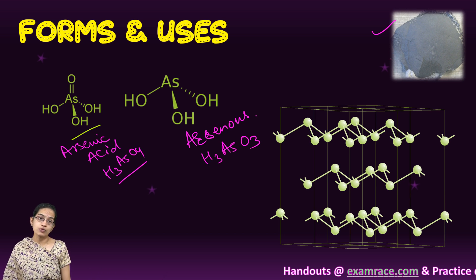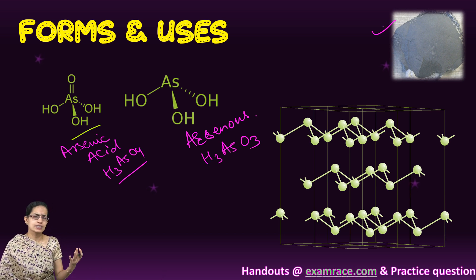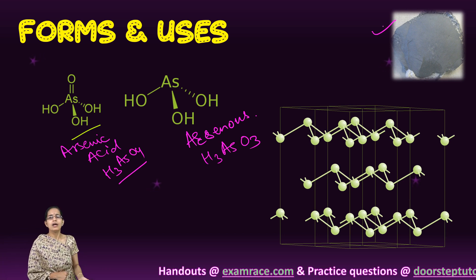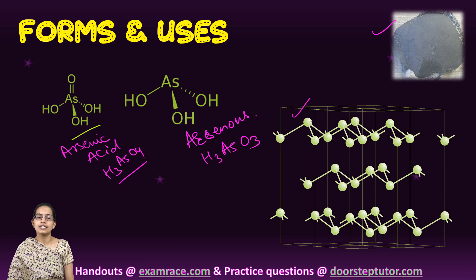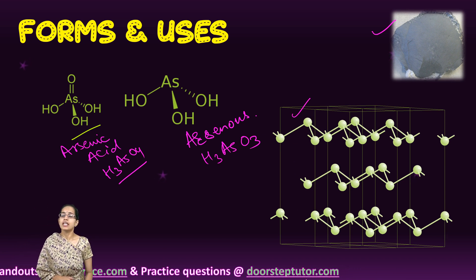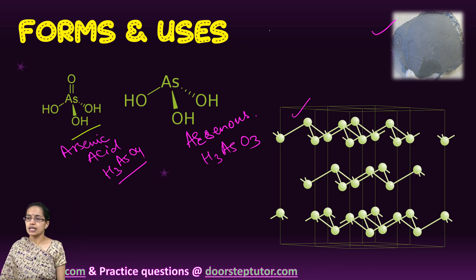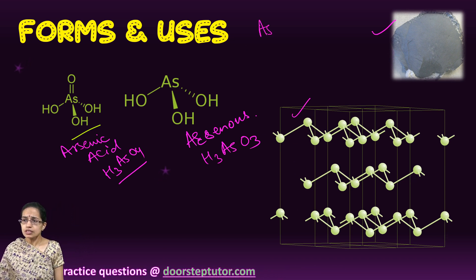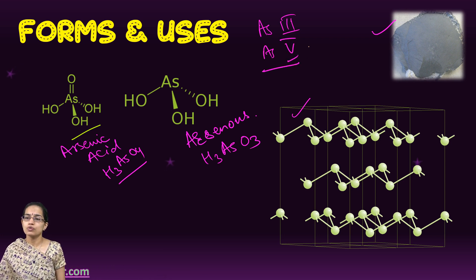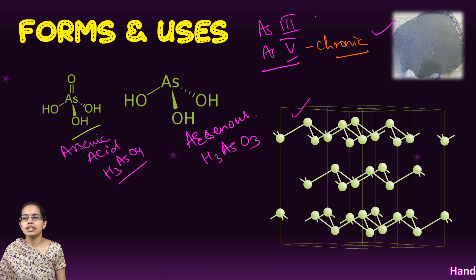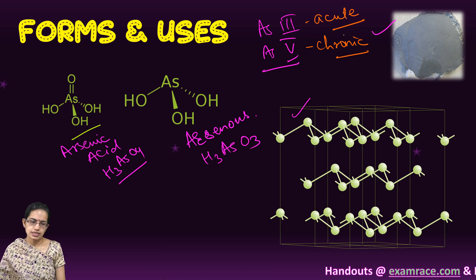Arsenic can be found in crystalline powder or amorphous form. Arsenic can exist as AS3 or AS5. AS5 is known for chronic toxicity, whereas AS3 is known for acute toxicity.